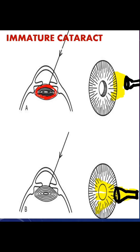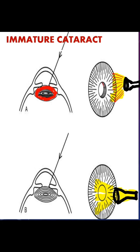Not all the fibers of an immature cataract are actually opacified, and therefore when you project a light, you will see a crescentic shadow on the inner aspect of the pupil temporally, and this is called an iris shadow.